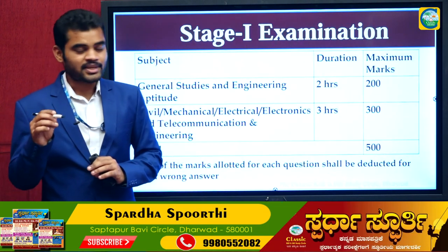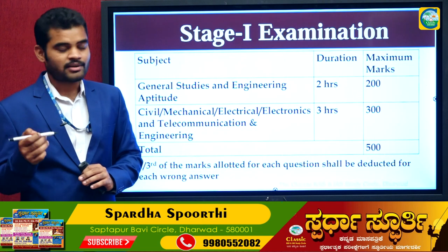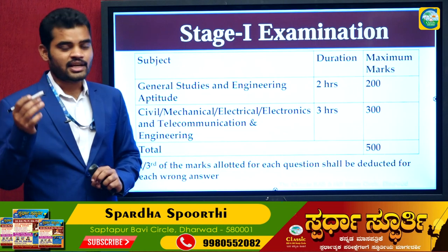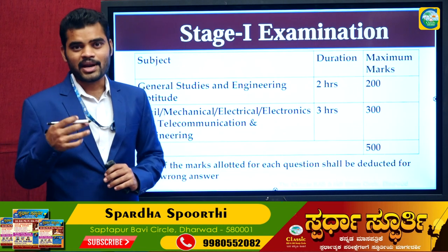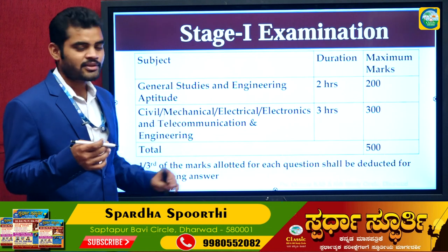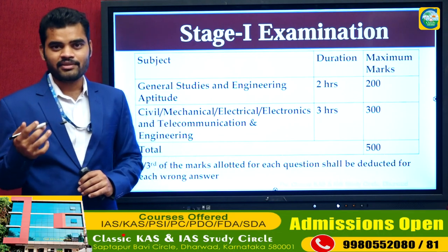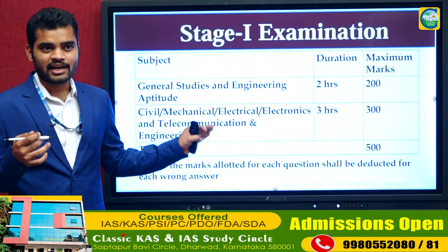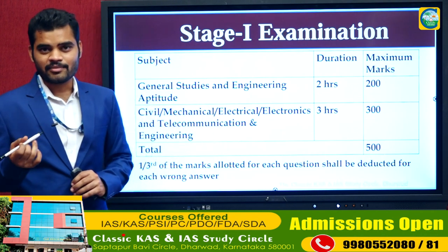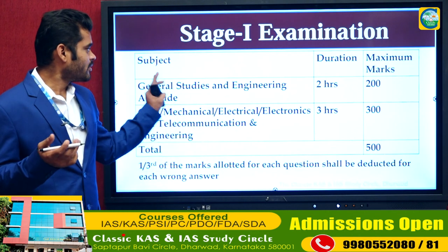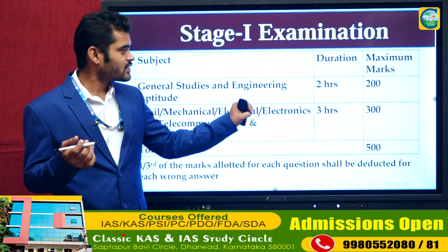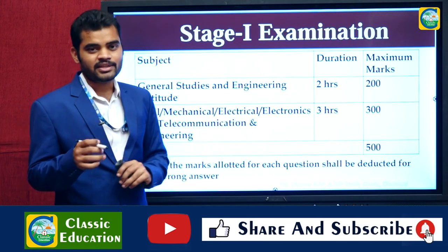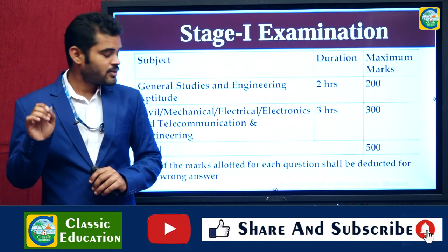The Engineering Prelims Examination has two papers. The first paper is General Studies and Engineering Aptitude. The second paper is branch-specific — Civil Engineering, Mechanical Engineering, Electrical Engineering, or Communication Engineering — whichever branch you applied for. The second paper has a 3-hour duration.